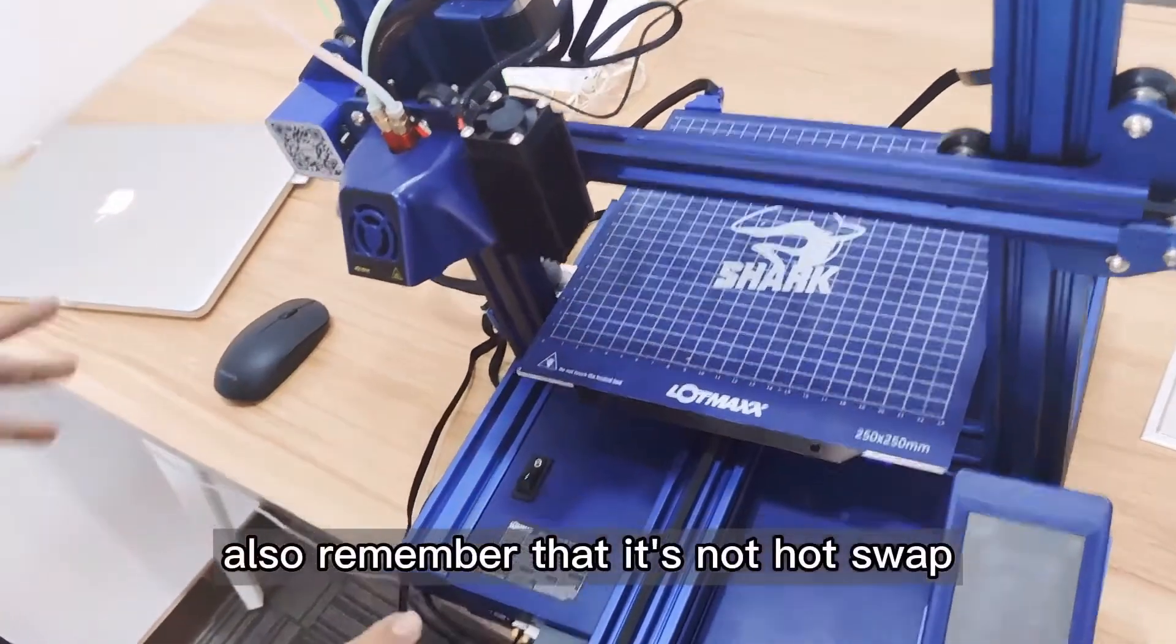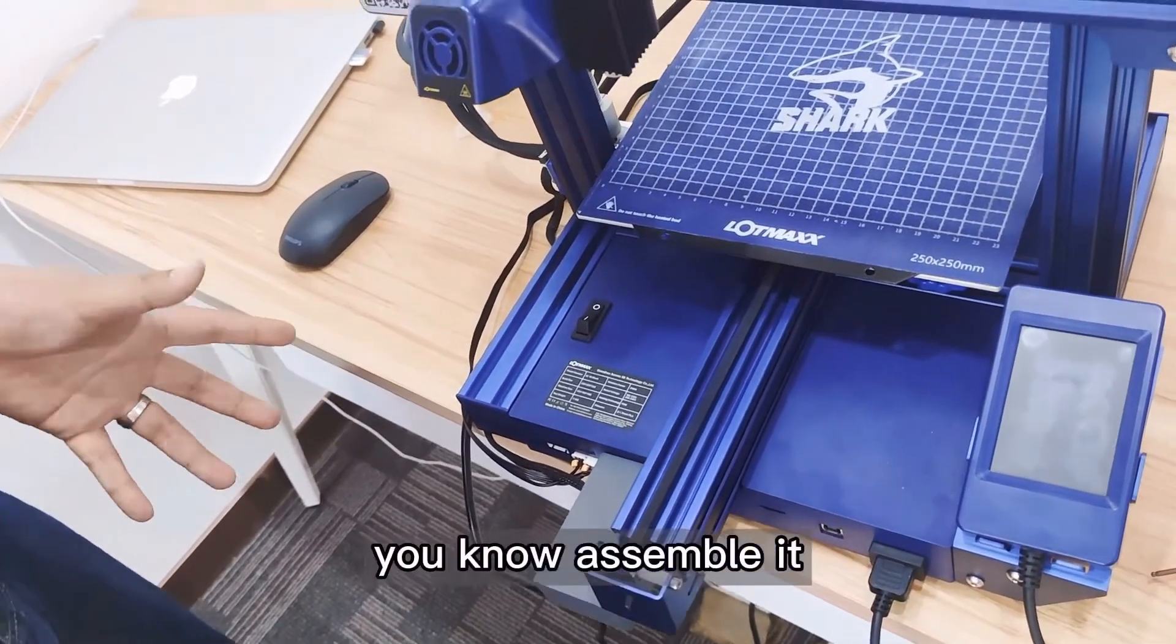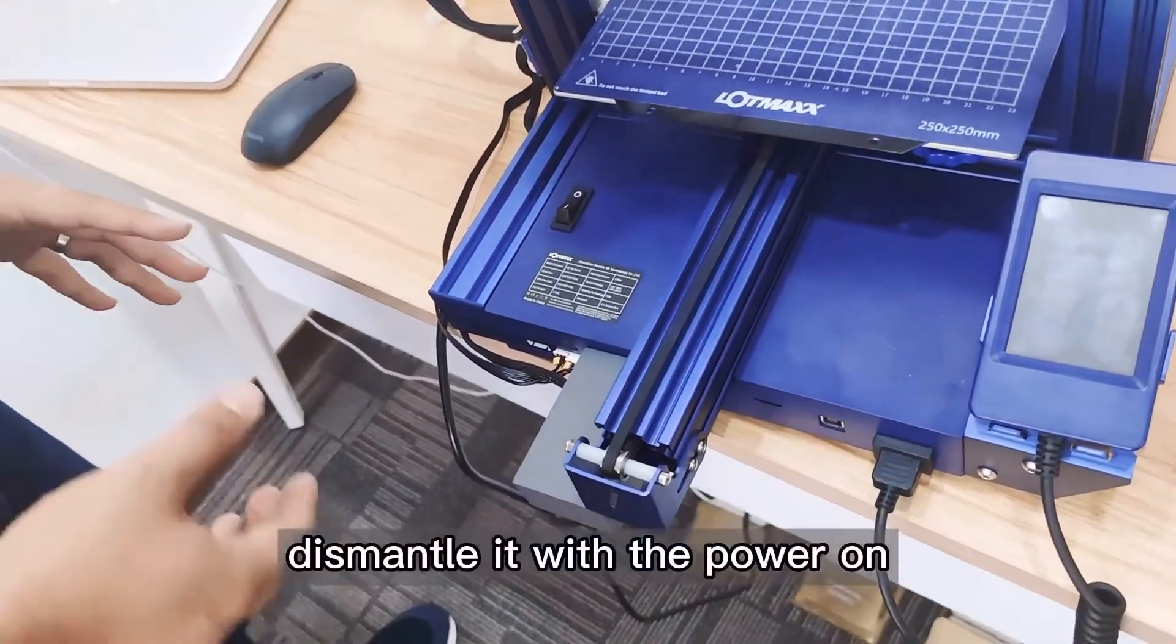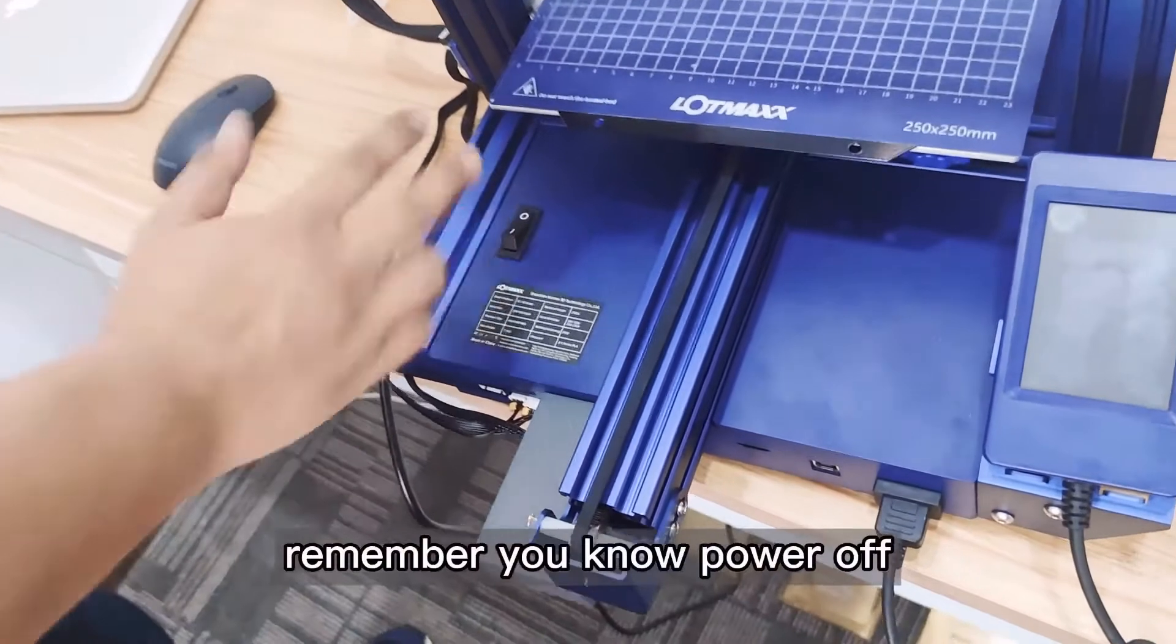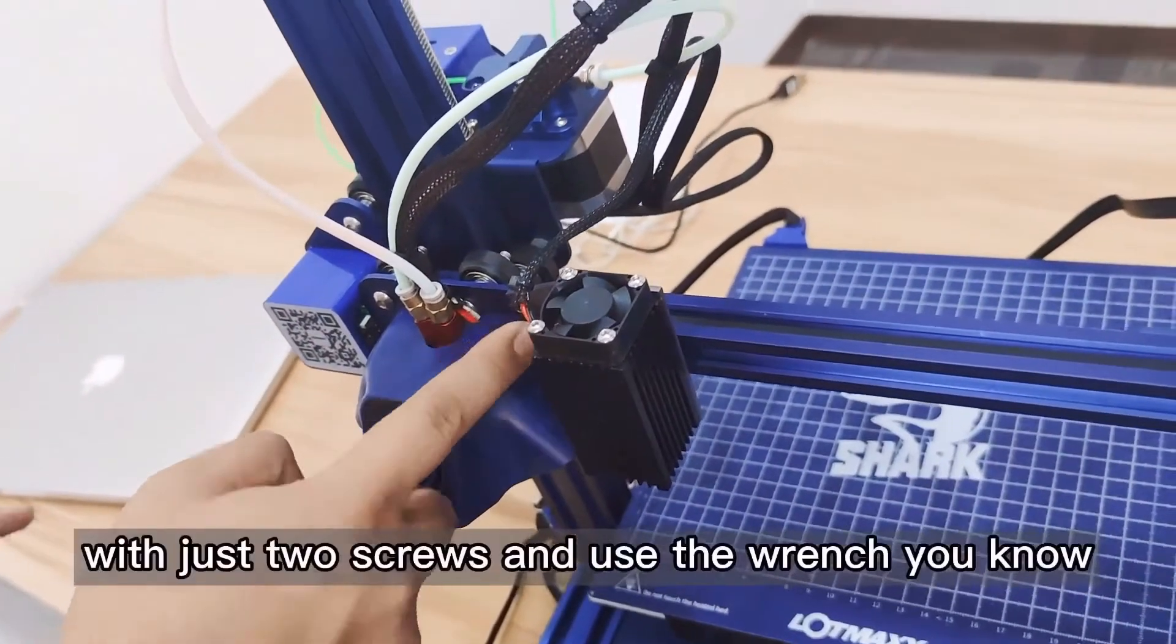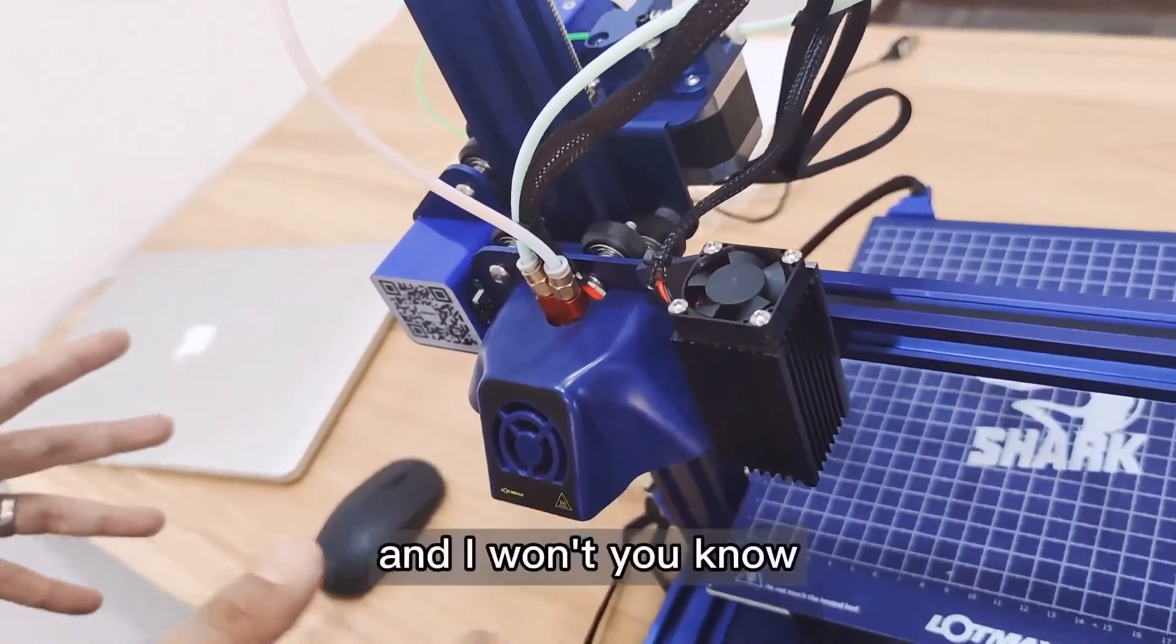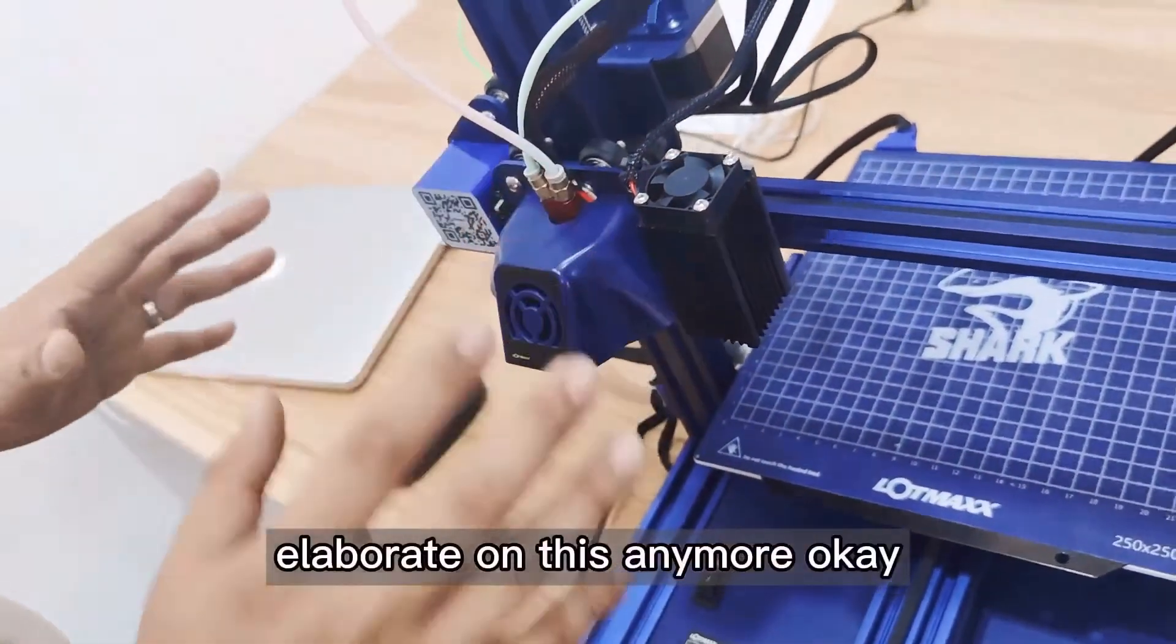Also remember that it's not hot swap. You cannot insert or assemble it with the power on. Remember to power off. This is the laser engraving part with just two screws. Use the wrench, really simple. I won't elaborate on this anymore.